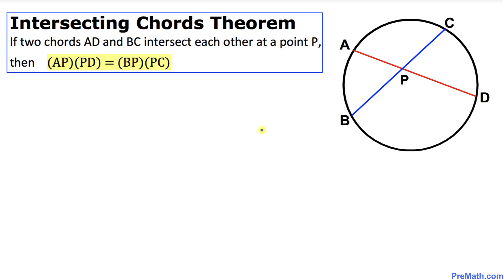Welcome to pre-math. In this video tutorial we are going to prove the intersecting chords theorem. If two chords AD and BC intersect each other at a point P, then the line segment AP times the line segment PD equals the line segment BP times the line segment PC.